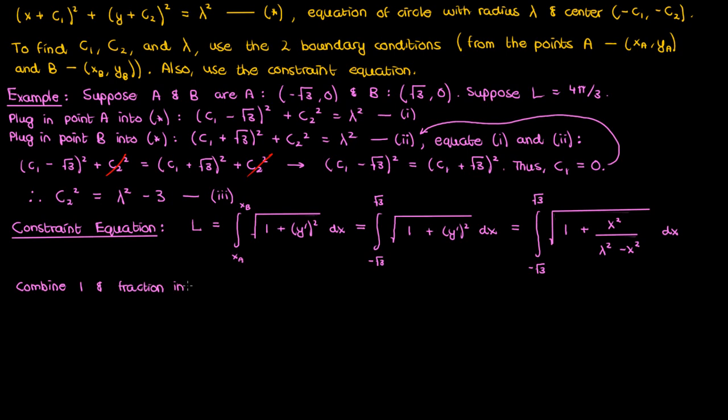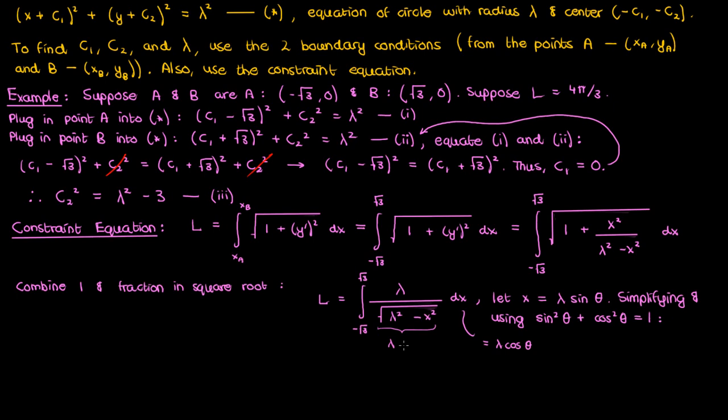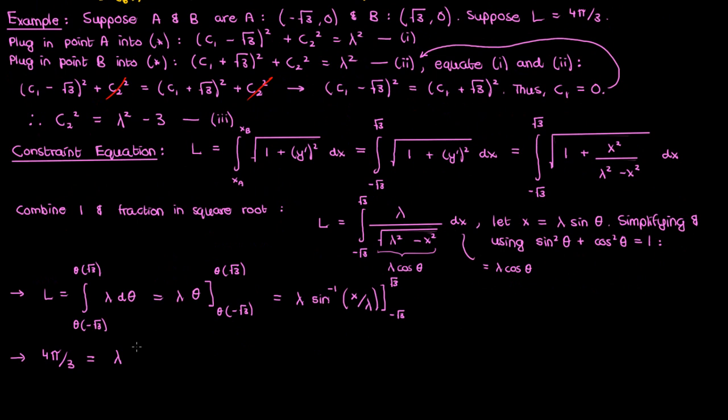And now if we use the trig substitution and let x equal lambda sine theta then dx will just be lambda times cosine theta d theta. If we then plug this into our integral and use the fact that sine squared plus cosine squared is 1 then our integral will become the following in terms of theta. We can now integrate this to get lambda theta and if we plug x back in we'll get an arcsine or inverse sine in our answer. Let's apply the limits and substitute the length of 4 pi by 3 into our equation to get the following.